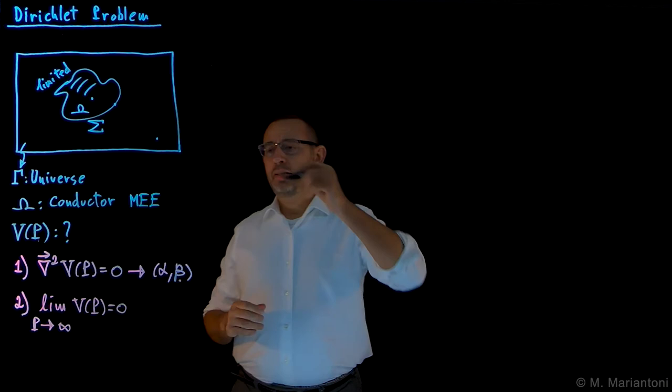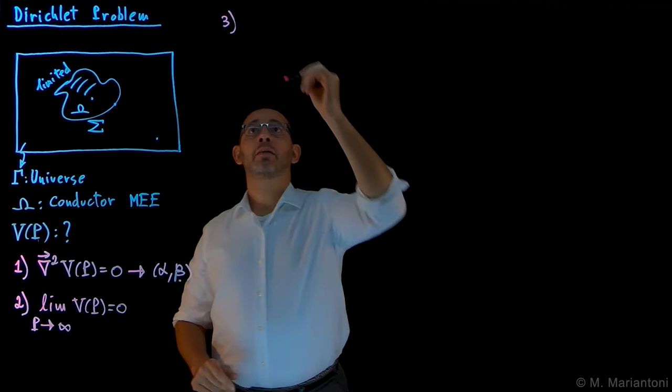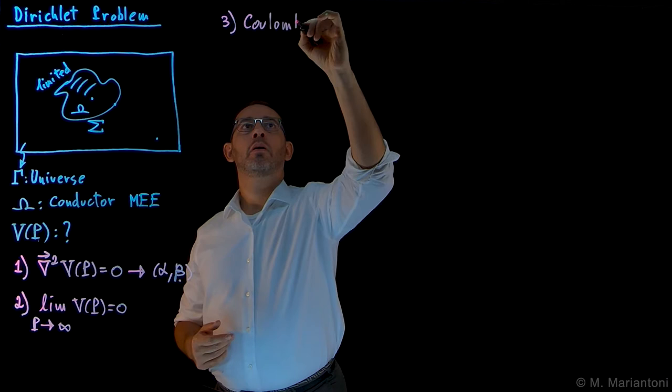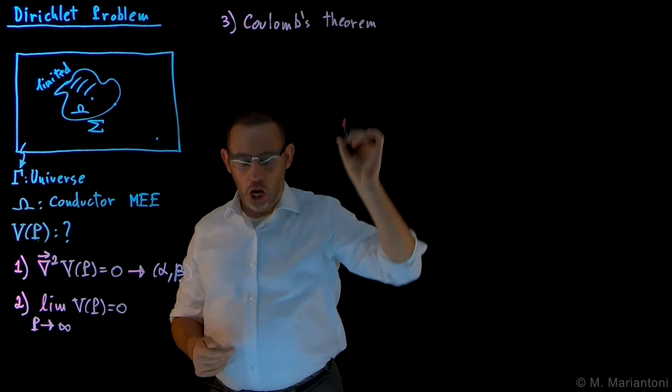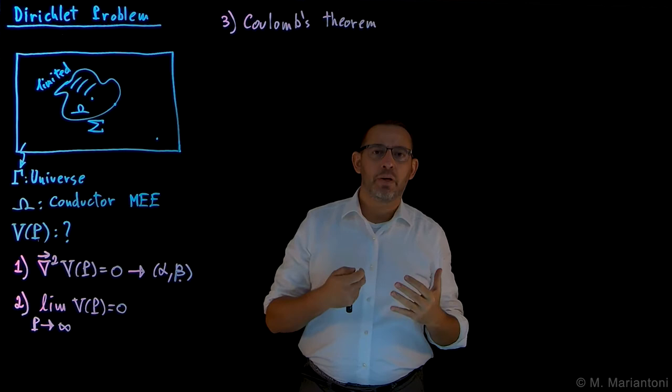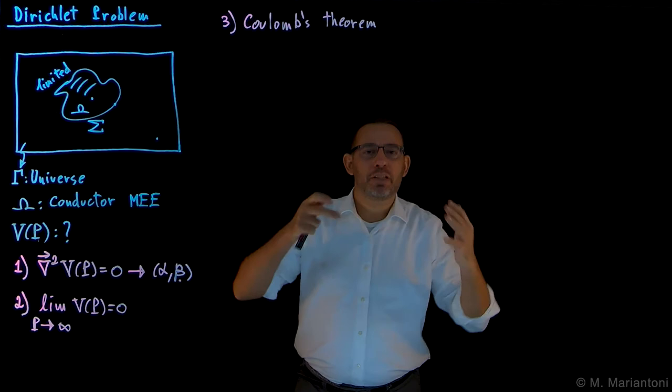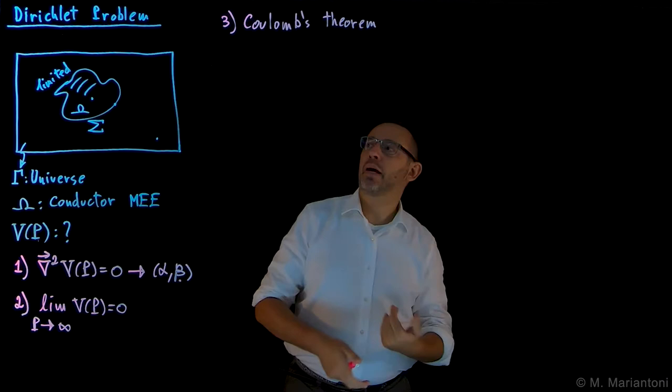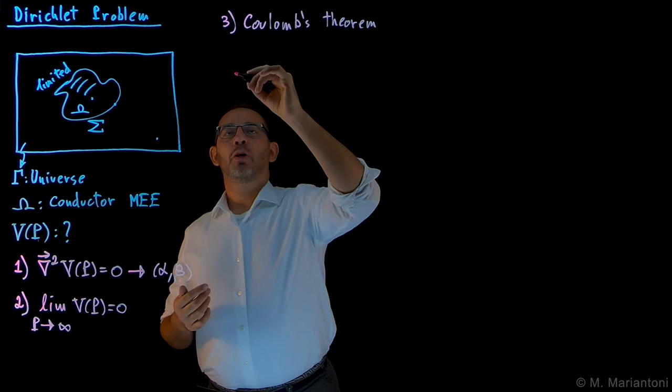The third step of the Dirichlet problem is what goes under the name of Coulomb's theorem, which has nothing to do with Coulomb's law. We discussed this extensively in 242. Coulomb's theorem comes from Gauss's theorem — it is a consequence of Gauss's theorem, specifically a consequence of case 2 of the local form of Maxwell's equation of the electrostatic field in the presence of conducting materials, as seen in C242.